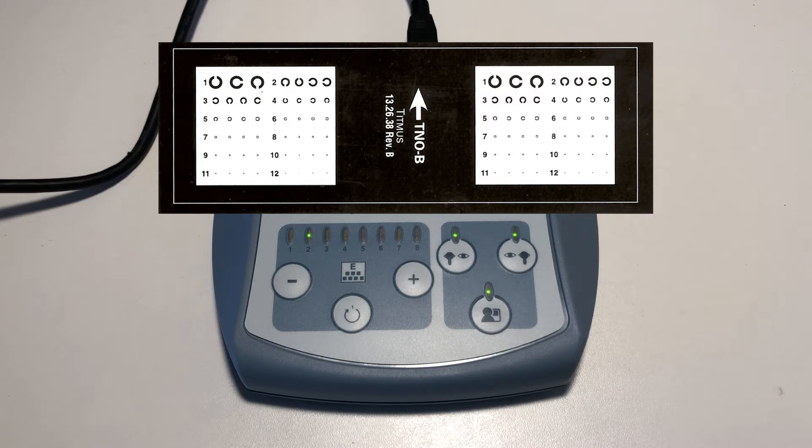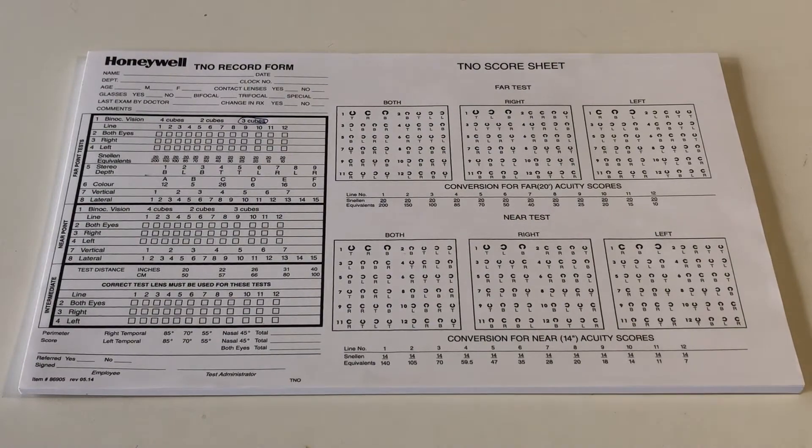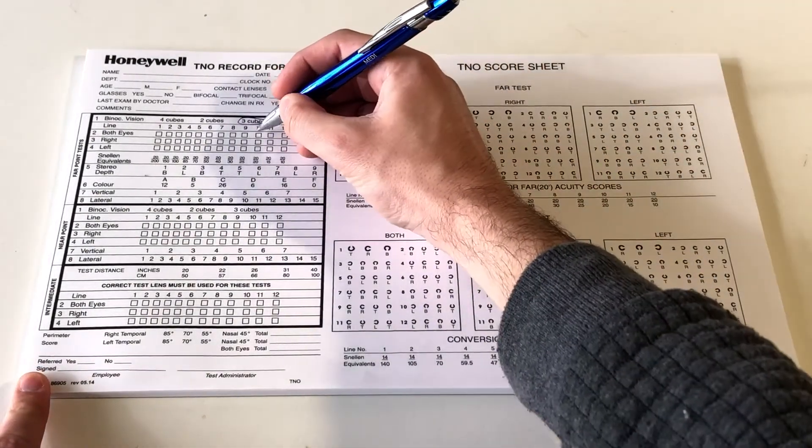If they get less than three, have them read the next largest line. Mark the last line in which they were able to correctly read at least three C's on the record form.